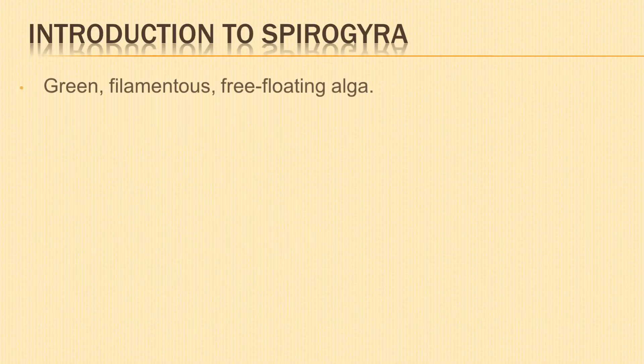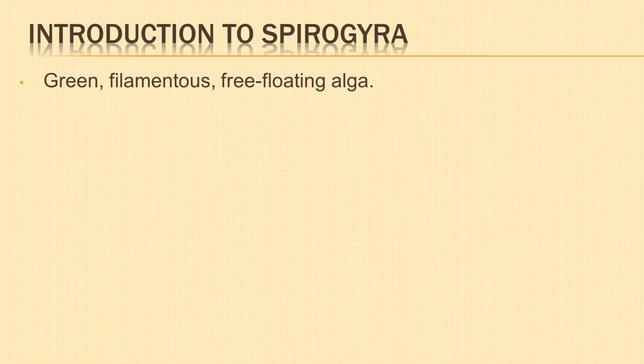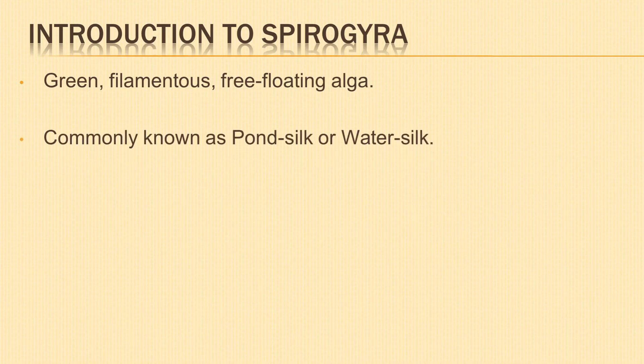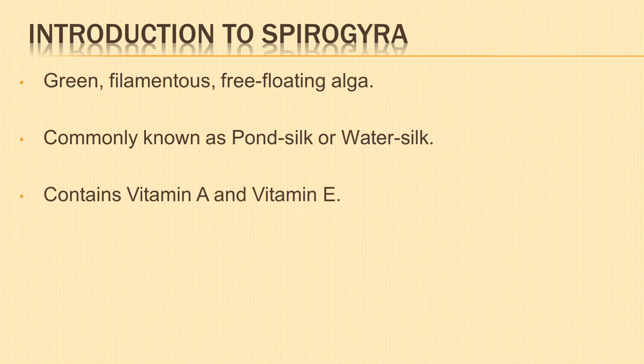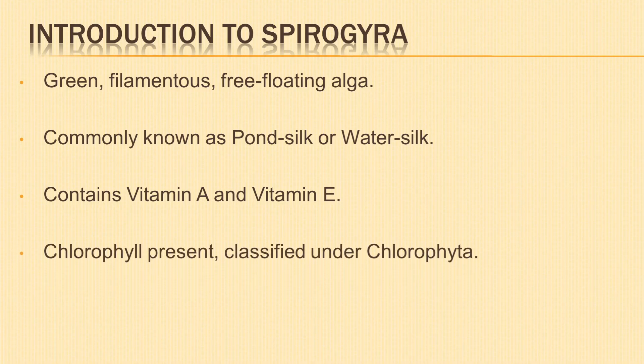Let us start with the introduction to Spirogyra. Spirogyra is a green, filamentous, free-floating, freshwater alga. It is commonly known as pond silk or water silk. Spirogyra contains a large amount of vitamin A and vitamin E. It is a photosynthetic organism and is classified under Chlorophyta due to the presence of chlorophyll.